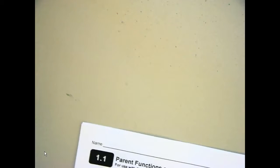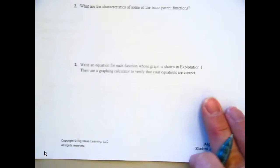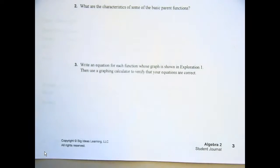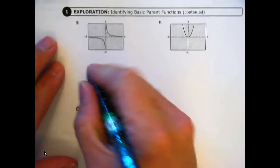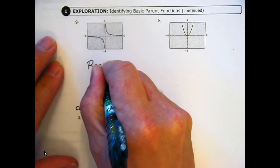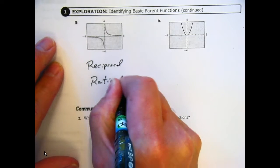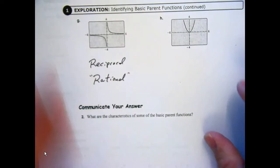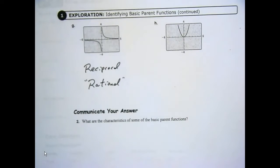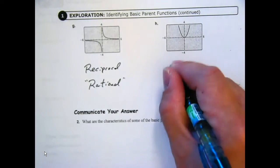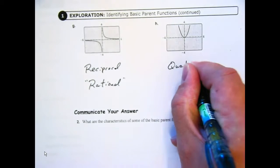Alright. And then we had another page, page 3 there. On page 3. How about G? And that's reciprocal. Now, we also call reciprocal a rational. Rational. Okay. It's a reciprocal function. And how about H? Quadratic. Quadratic. Alright.